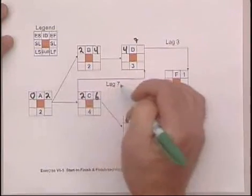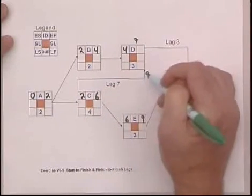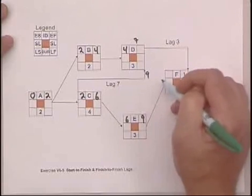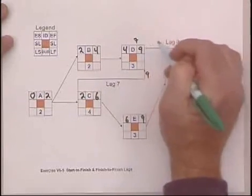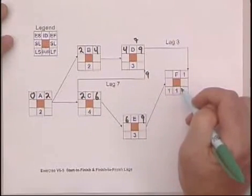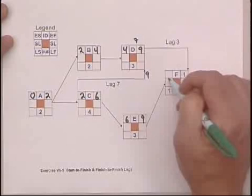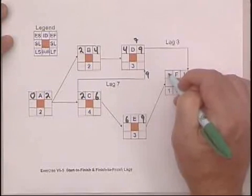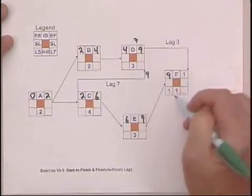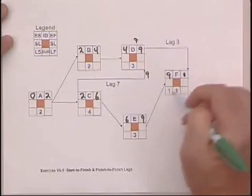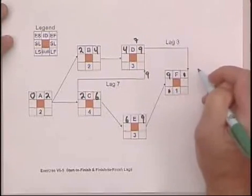So we add two plus seven is nine. We choose the larger number going forward, and that's nine for the earliest finish for activity D, respecting this lag. Then we go to F. F can start as soon as E is done, which is the ninth day.